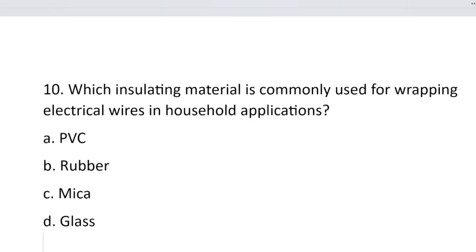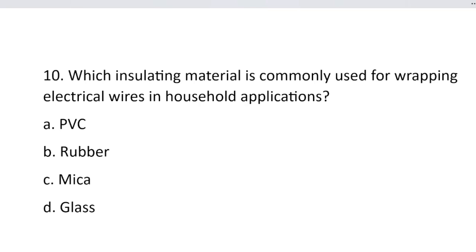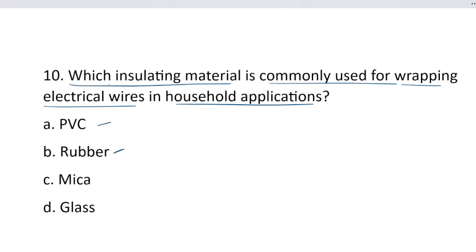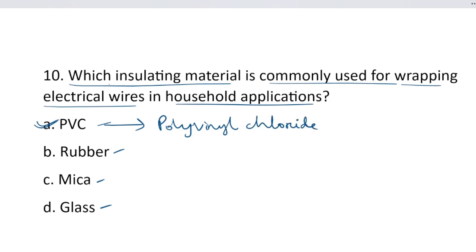Question number 10. Which insulating material is commonly used for wrapping electrical wire in household applications? Option A, PVC. Option B, rubber. Option C, mica. And option D, glass. The correct answer is option A, PVC — polyvinyl chloride. Next.